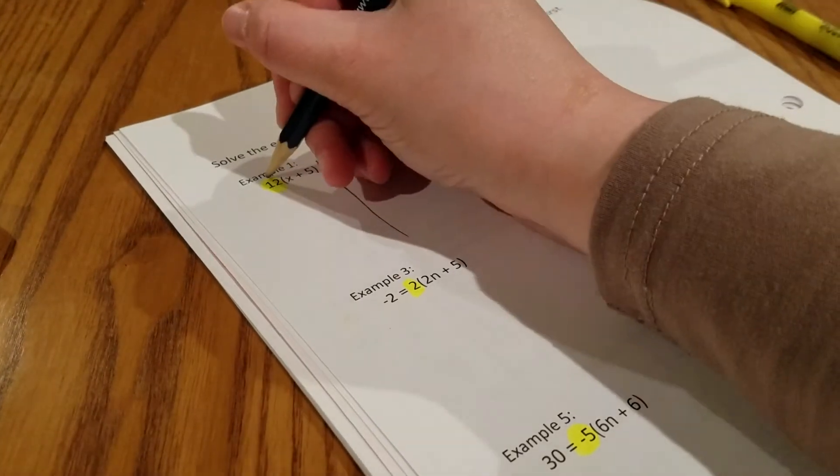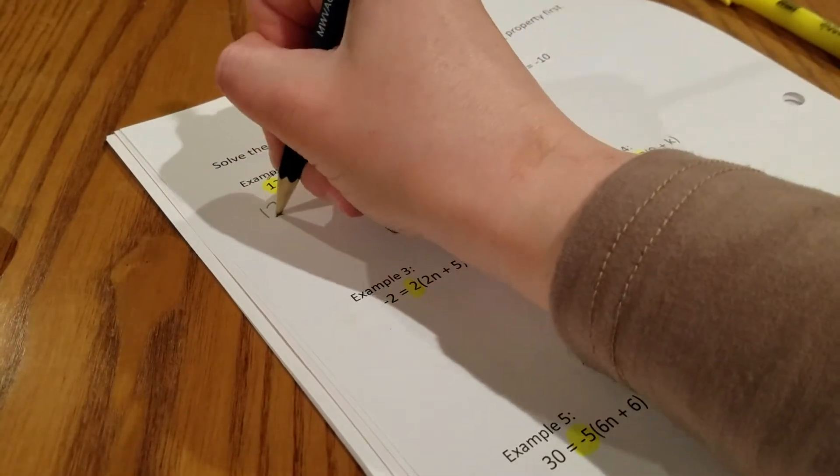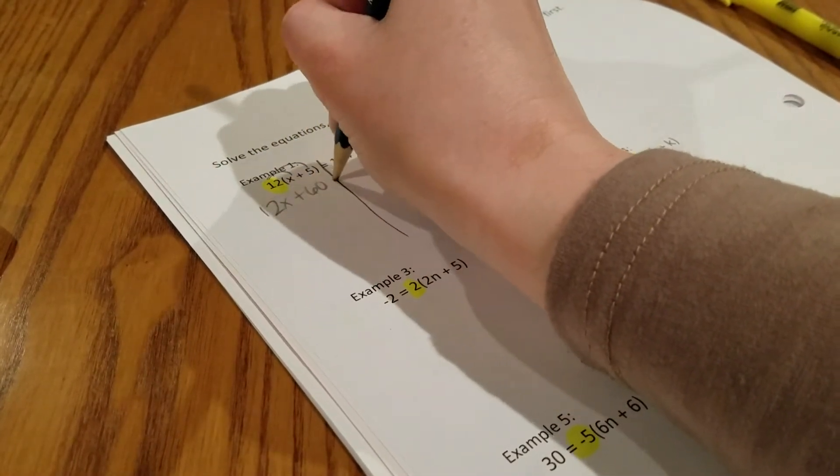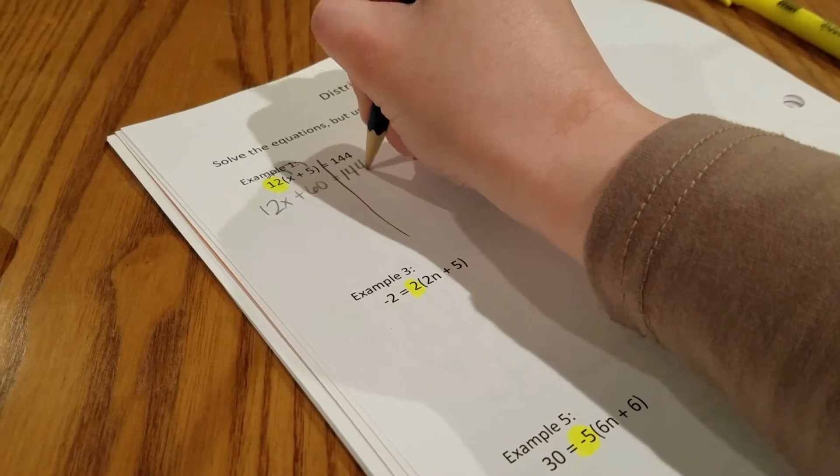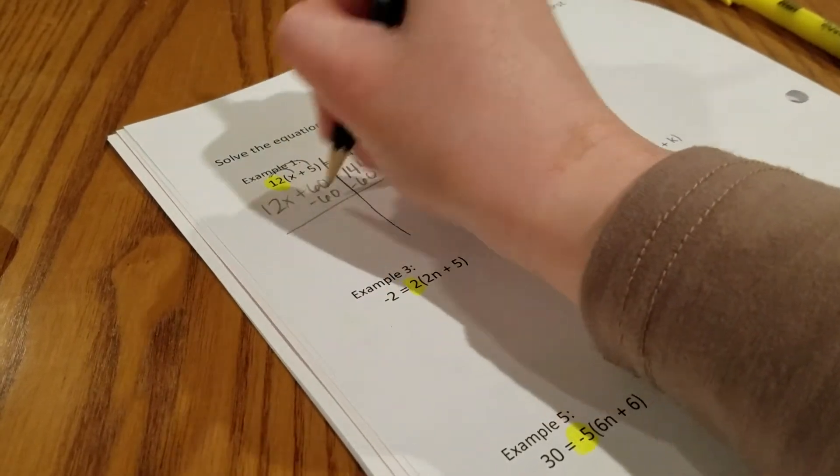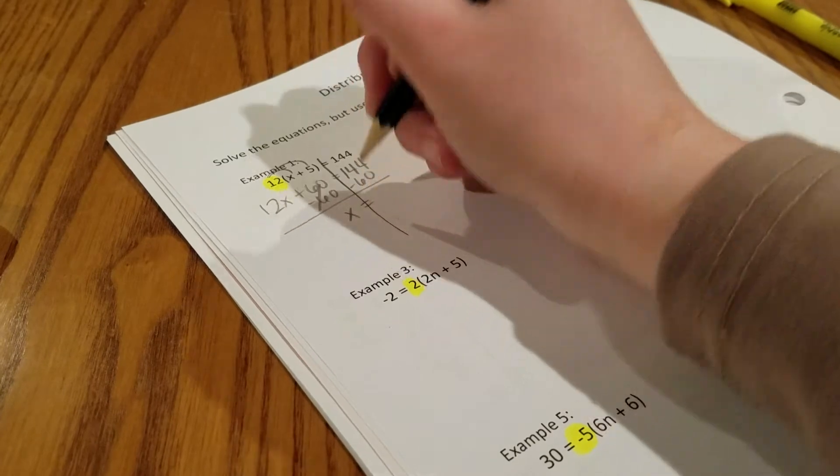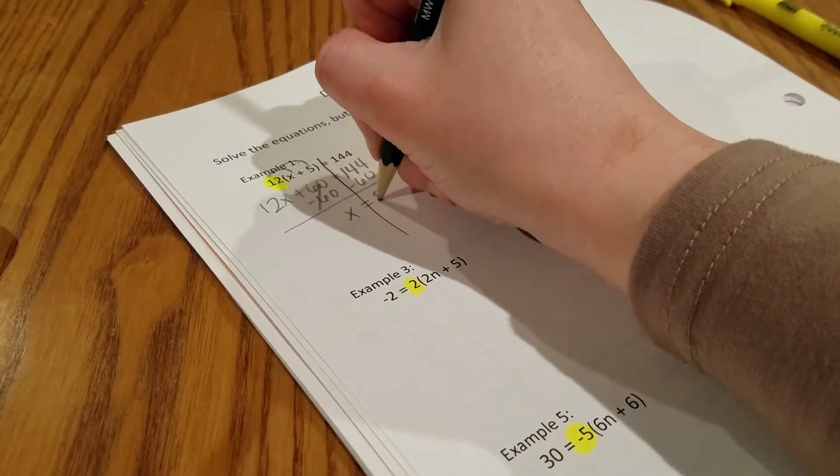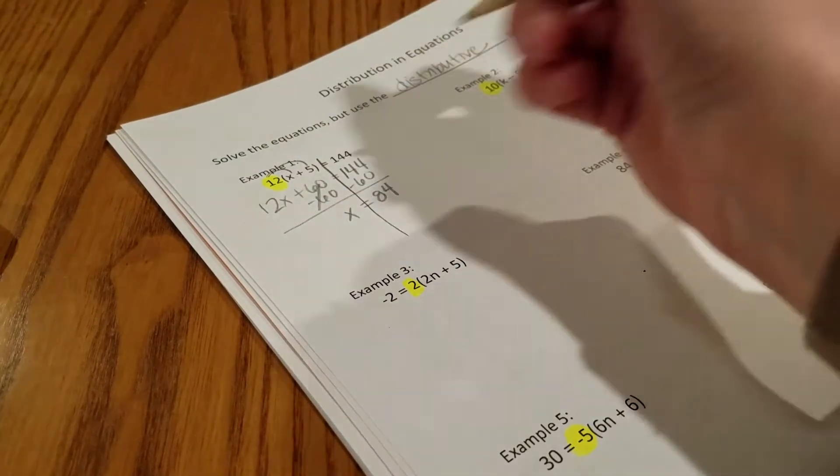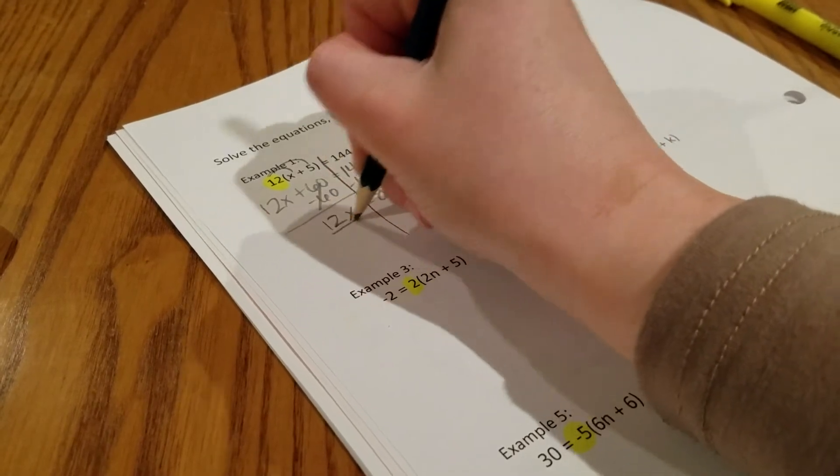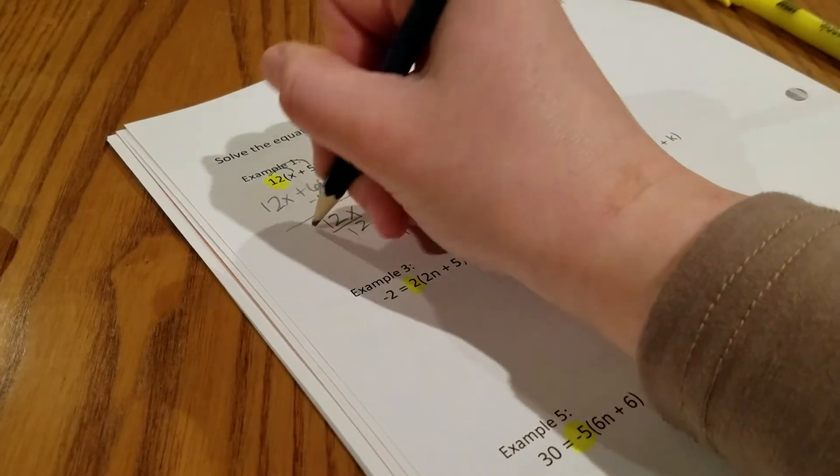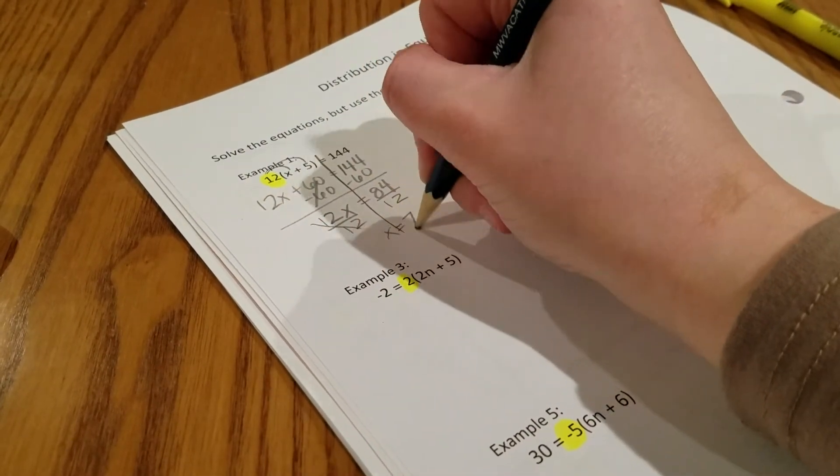Drop a line down. Distribute your 12, so you get 12x plus 60 equals 144. Subtract the 60, so we get 12x equals 84. Divide by 12, so x equals 7.